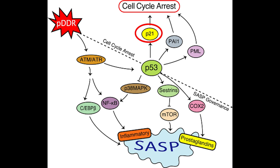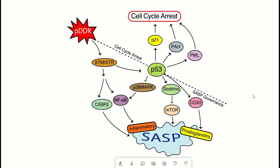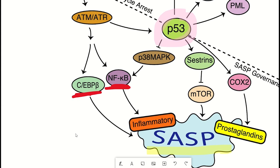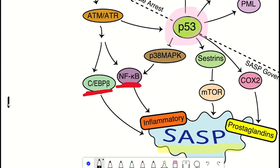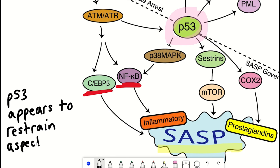There are two main transcription factors, NF-kappa-B and C/EBP-beta, that control many SASP components. However, it seems that p53 can influence these factors such as indirectly regulating NF-kappa-B. Some earlier work showed that if you knock down p53, as in reduce the overall abundance of it in a cell, then certain inflammatory factors seem to increase, suggesting that p53 has a repressive component over the SASP.